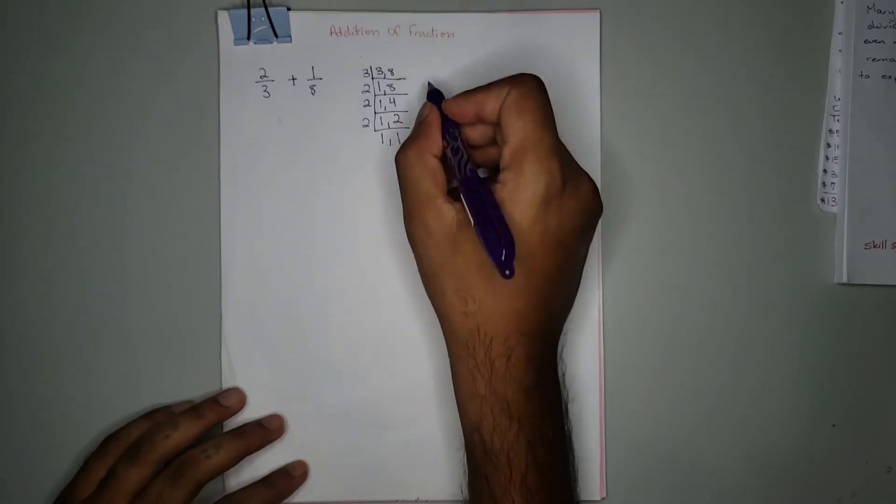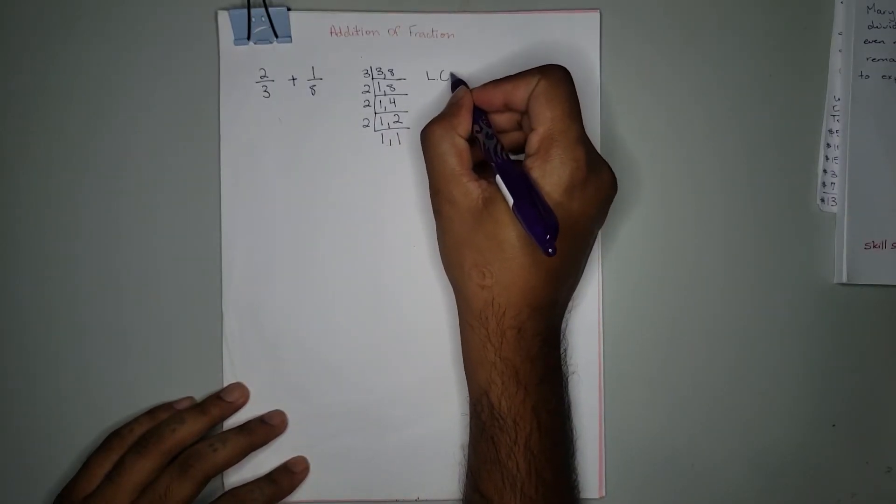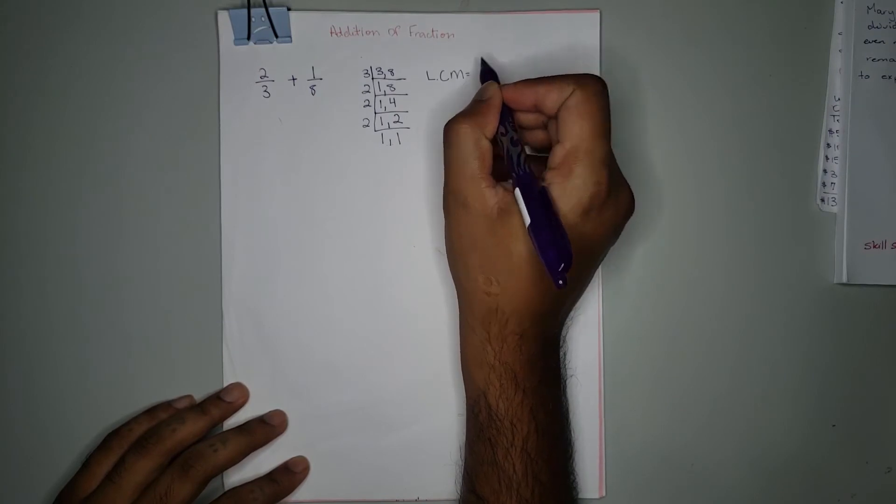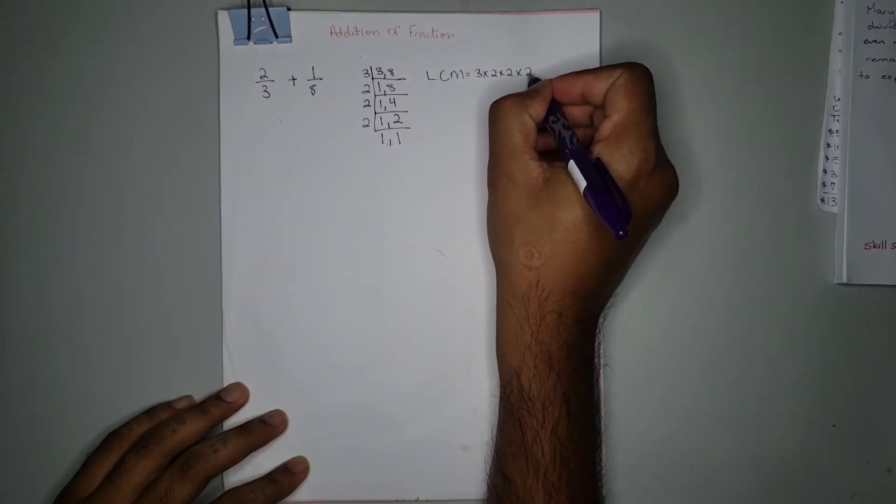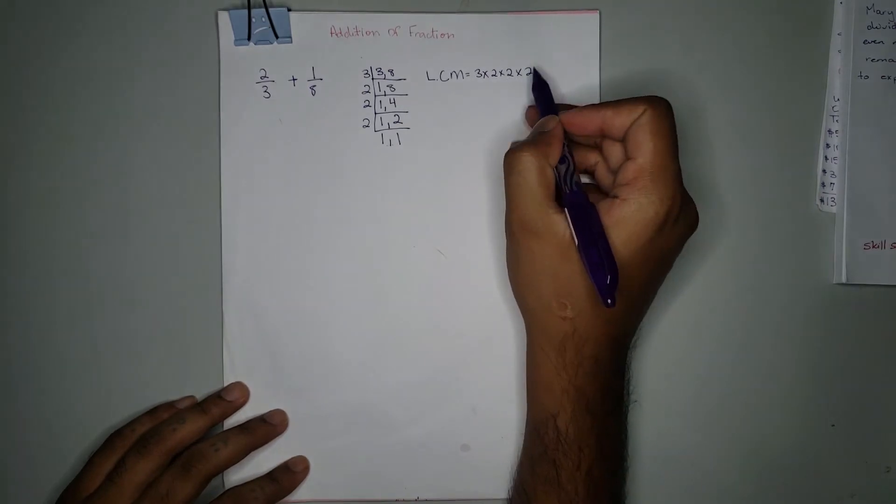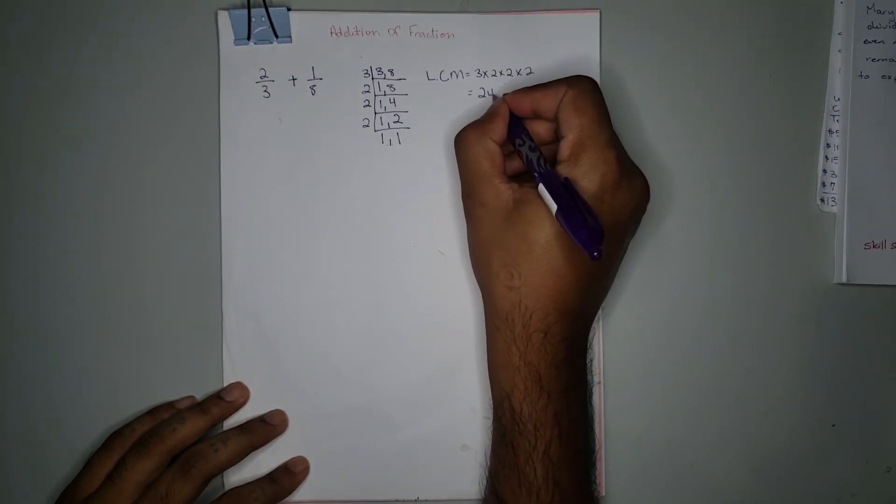So you end up with 1 and 1 here. Therefore, the LCM of 3 and 8 will be 3 × 2 × 2 × 2, which is 3 × 2 = 6, 6 × 2 = 12, 12 × 2 = 24. So we have the new common denominator, which is 24.